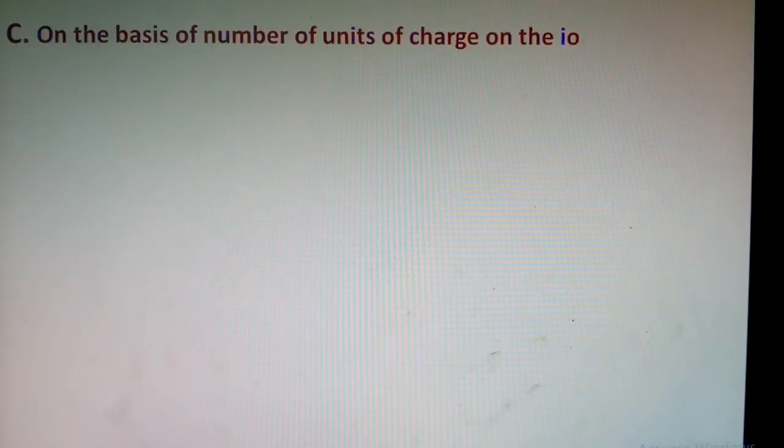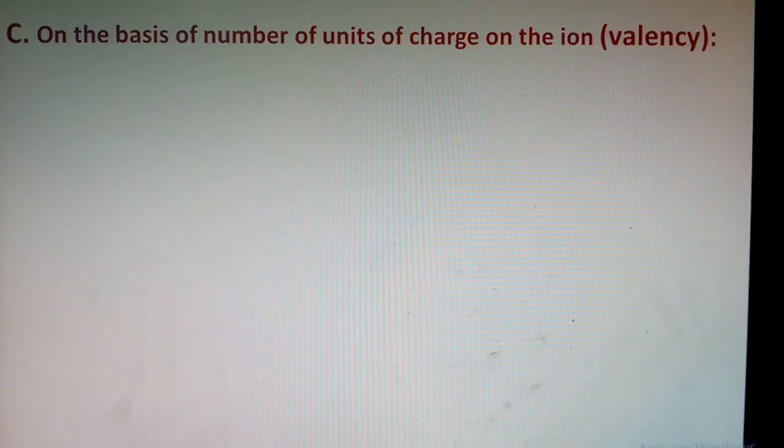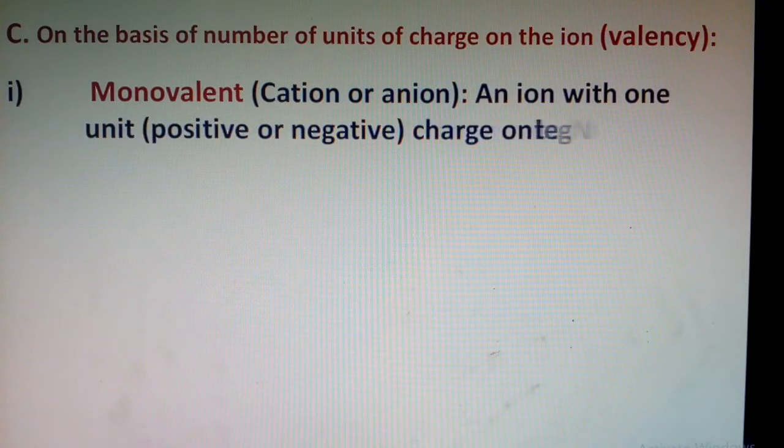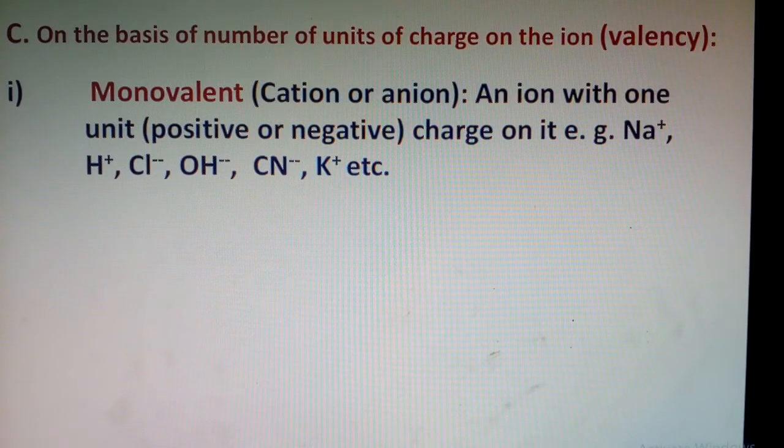Third is on the basis of number of units of electric charge—how many units of charge are there? There are three types. First, monovalent ions: all those ions, whether cations or anions, which have only one unit of either positive or negative charge. Examples include sodium, hydrogen, chloride, hydroxide, cyanide, potassium.